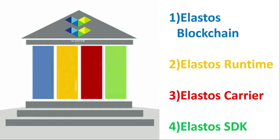There are four pillars to the Elastos project: the Elastos blockchain, Elastos runtime, Elastos carrier, and Elastos SDK. If you understand these four pillars, you understand the Elastos project.